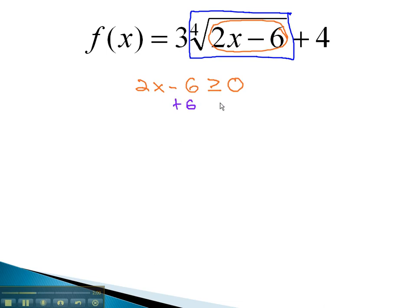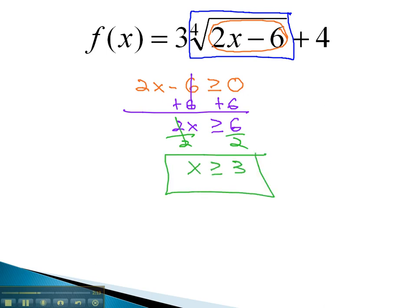Solving this equation by adding 6 to both sides, giving us 2x is greater than or equal to 6, and then dividing by 2, gives us the domain of the function to be x is greater than or equal to 3. In other words, we're saying that any value greater than or equal to 3, when plugged in for x, will give us a real solution. If we pick a number smaller than 3 and plug it in for x, we'll end up with a negative value under the root, which makes the function undefined.